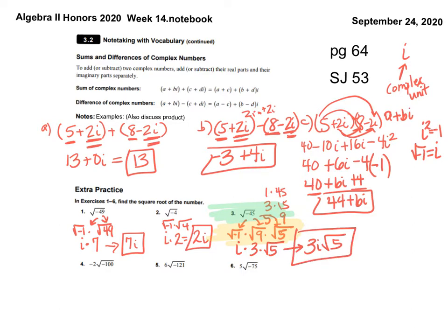For number 4, 100 is a perfect square but it's got this negative 2 out front — I just keep the negative 2. Negative 2 times — take the negative out from under the radical, and I do expect to see this step on your paper. Negative 1 times 100 is negative 100. Simplify each piece: negative 2 stays, the square root of negative 1 is i, the square root of 100 is 10. Negative 2 times i times 10 is negative 20i.